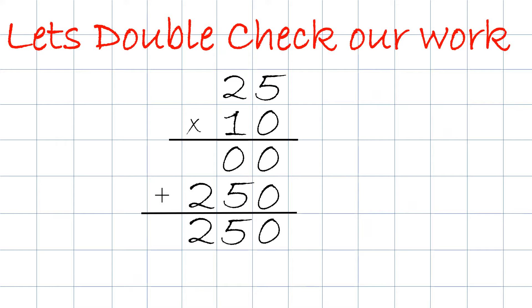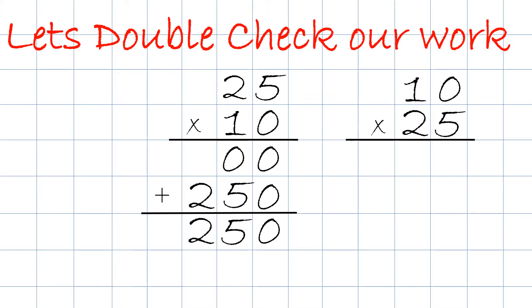You could always use a calculator, but imagine the high possibility that you will end up on some remote island where you may not have a calculator. One of the ways to check your work is to flip-flop the factors, so instead of 25 times 10, it's going to be 10 times 25.